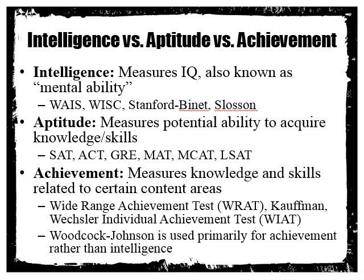Intelligence here means a person's raw ability. Aptitude is a little different — we're talking about a person's potential ability to acquire knowledge or skills. Aptitude testing includes things like the SAT, the ACT, the GRE, the MAT, the MCAT, and the LSAT. In other words, we're looking at how predictive these tests are — to what degree can we predict that you'll be successful in college or in things like law school, for example?